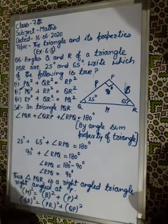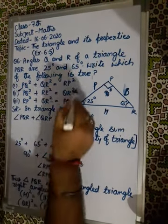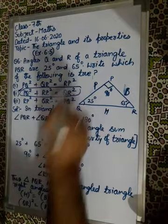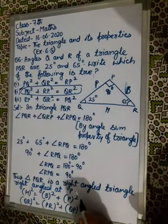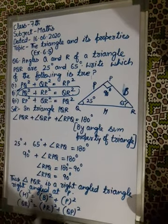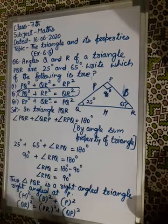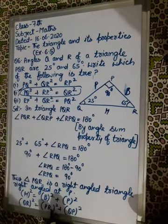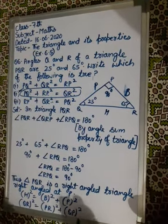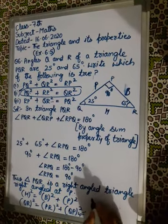Therefore, QR² equals RP² plus PQ². This can be rewritten as PQ² + RP² = QR². Hence, option B is true.